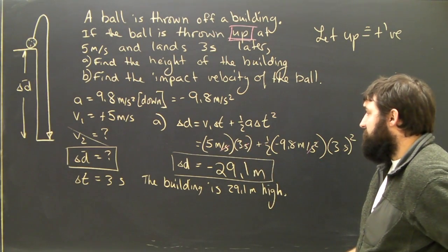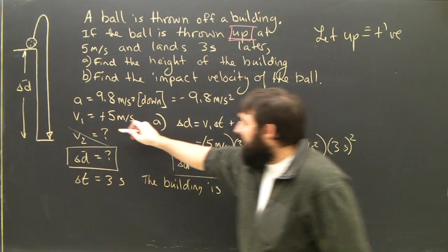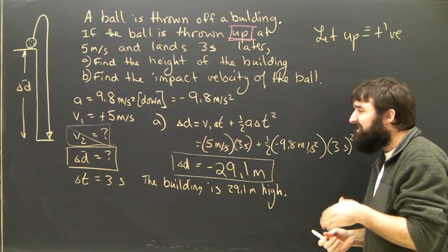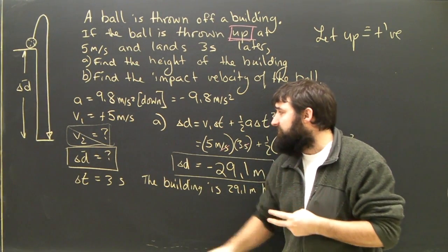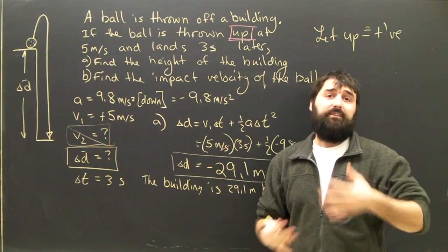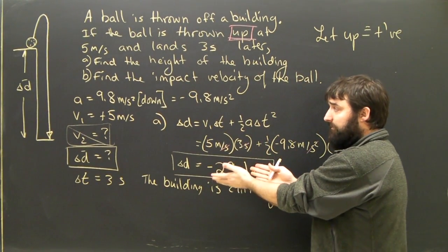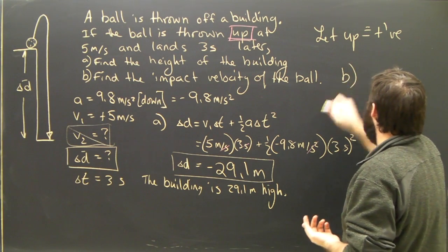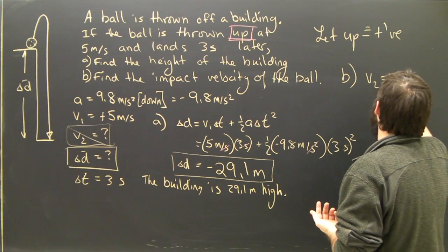So, our givens haven't changed, except this time, now for part B, we are looking for V2. The best equation to use would be equation 2, which does not have D, just in case we have messed up our answer to part A. Part B won't be messed up. So, for part B, I'm going to use equation number 2.